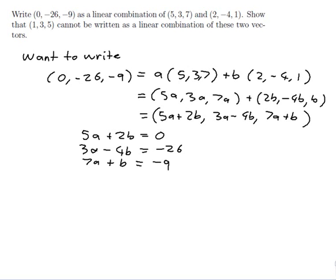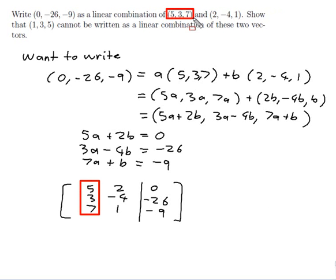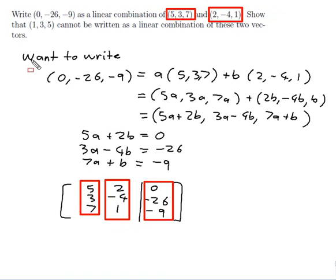I know how to solve three equations in two unknowns — I put them in a matrix and do row operations. That would be the augmented matrix with columns [5,3,7], [2,-4,1], and [0,-26,-9]. I can see that the first two columns are these vectors and the last column is the target vector. So next time I want to see if something is a linear combination of other vectors, I'll put the target in the answers column and the other vectors as the remaining columns, then row reduce.